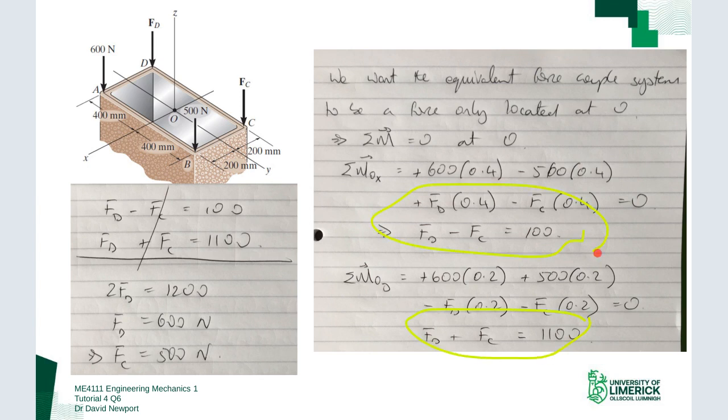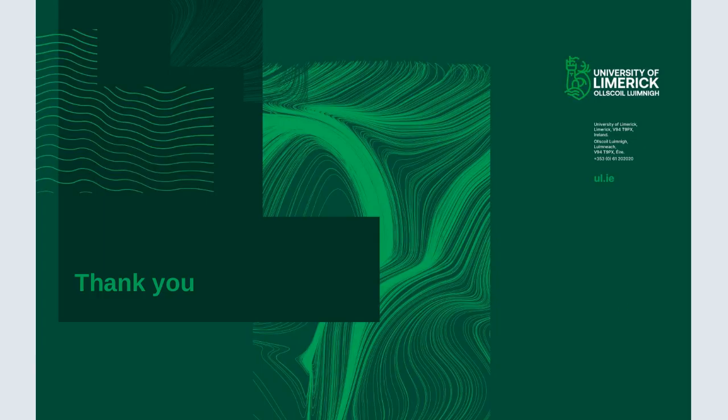So what we have then are our two equations, two unknowns, and we can solve for those. So we'll do that over here and if you just work through that very quickly you see that FD is 600 and the FC is 500. Okay, that concludes that question, thank you.